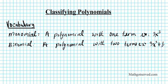So you have a term and a term. Terms are separated by plus or minus. How about trinomial? You know what a triangle looks like, right? It's a polygon with three sides. So a trinomial is going to be a polynomial with three terms.